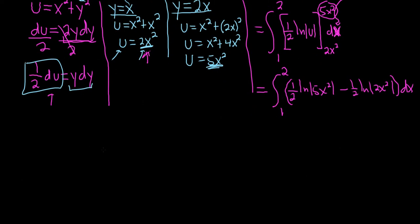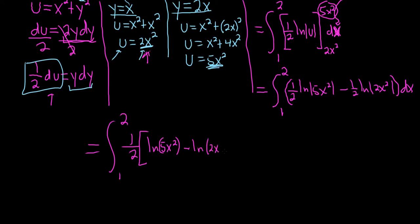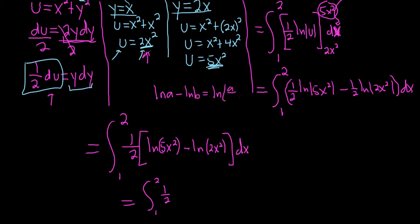Let's clean this up. We pull out the 1/2. We can drop the absolute value because 5x squared is always positive for x from 1 to 2. Using a property of logs — ln(a) minus ln(b) equals ln(a/b) — we get 1/2 ln(5x squared over 2x squared). It cleans up really nicely.